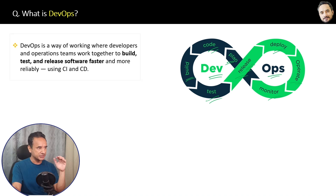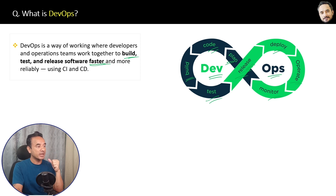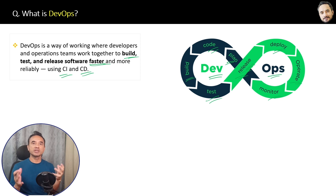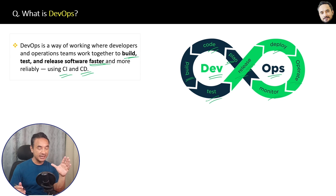Here is the final definition: DevOps is a way of working where developers and operations teams work together to build, test, and release software faster and more reliably using CI and CD. You can deploy an application without DevOps, but with DevOps it is faster. Now, what is CI and CD? That is very important and I will explain it in the upcoming question.